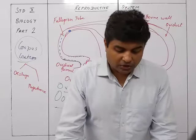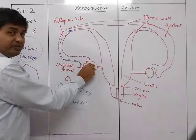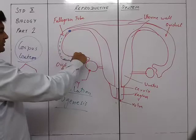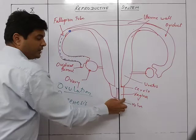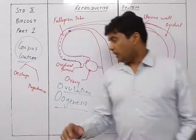To summarize the structure of the female reproductive system: the ovary produces the ova or egg, which is released into the oviductal funnel, travels through the oviduct to the uterus, and the outer part leading outside is the vagina. The ovary is the primary organ while the others are accessory parts.